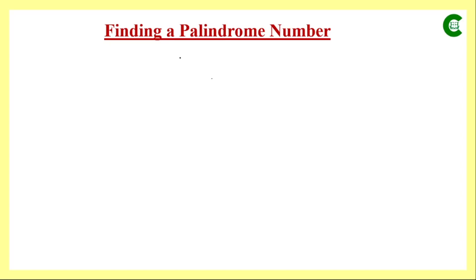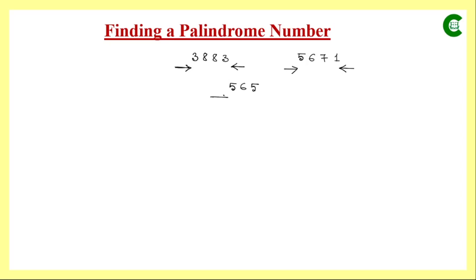For example, take 3883. If we look from the other side, the sequence of digits is still 3883, so from both sides the number is the same — this is a palindrome number. Now take 5671: from this side it is 5671, but from the reverse side it is 1765, so it is not a palindrome. But if we take 565, from both sides it is 565, so this is a palindrome number.